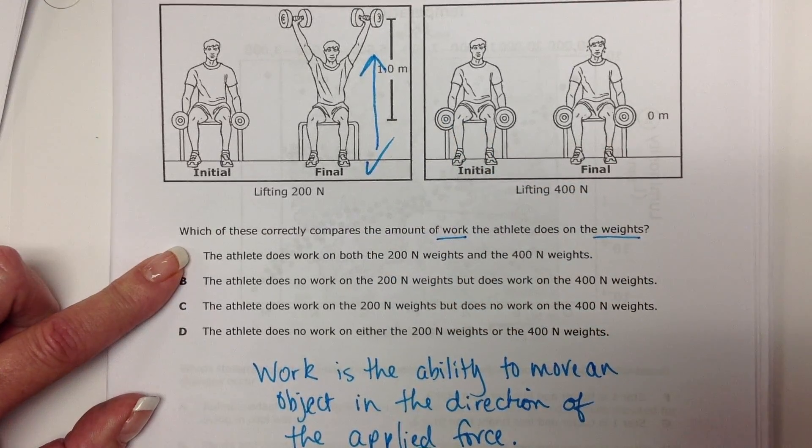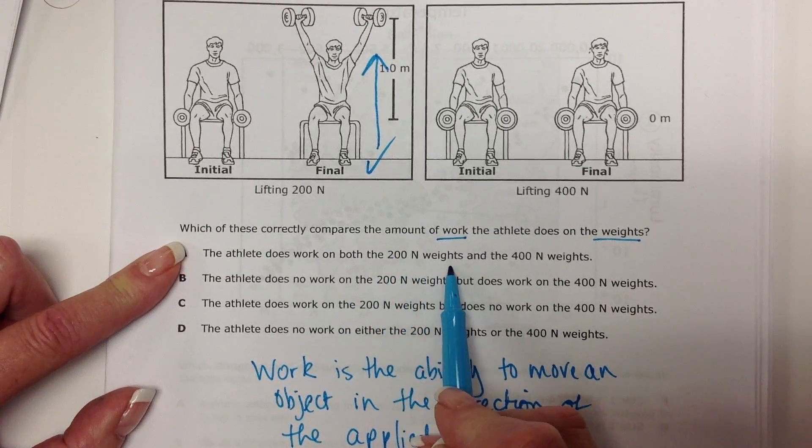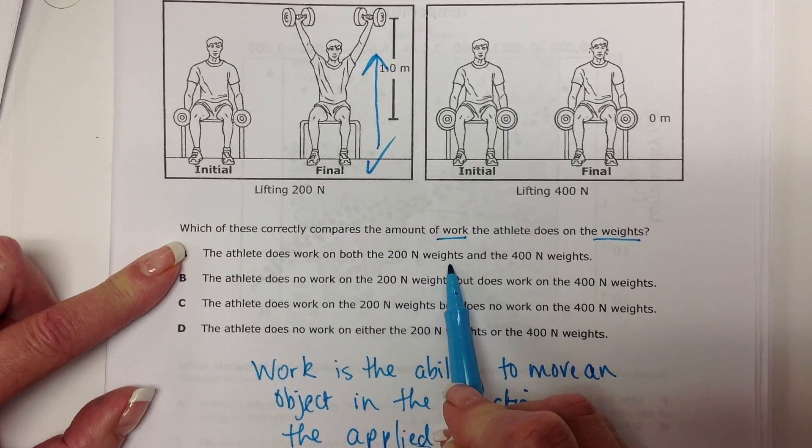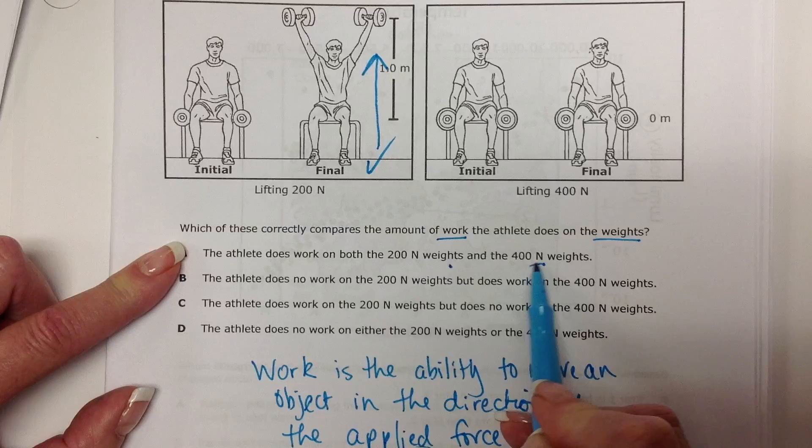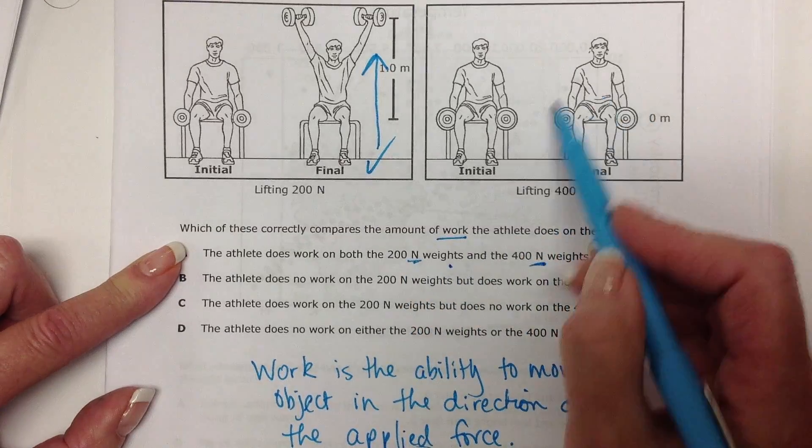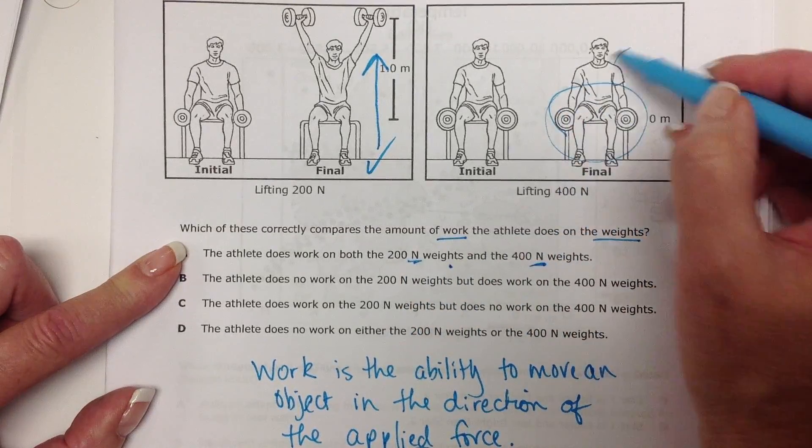Alright, so let's see what we have. The athlete does work on both the 200 Newton weight and the 400 Newton weight. No, he does not. He can't lift them here. There's no work here.